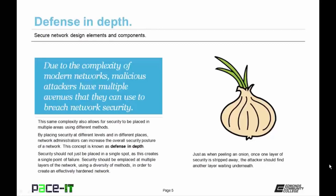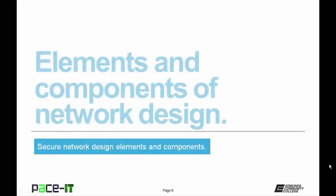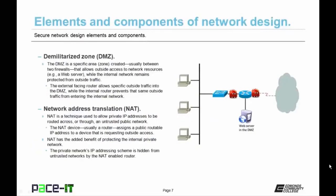By using defense in depth, you should be able to create a highly hardened and secure network. Let's talk about elements and components of network design. First up is the demilitarized zone, or DMZ. The DMZ is a specific area — created usually between two firewalls — that allows outside access to internal network resources such as a web server, while the internal network remains protected from that same outside traffic. The external facing router allows specific outside traffic into the DMZ, while the internal router prevents that same outside traffic from entering the internal network.